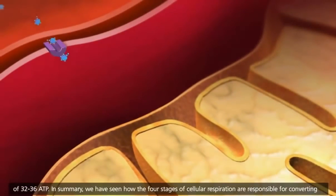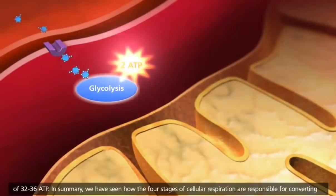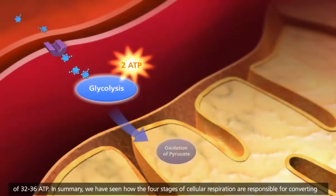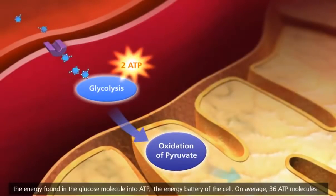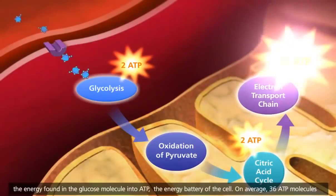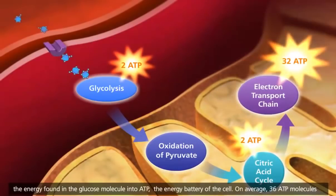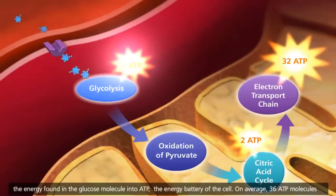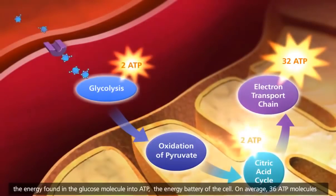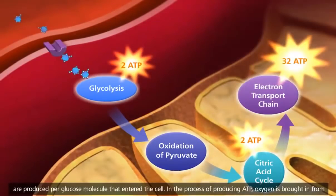In summary, we have seen how the four stages of cellular respiration are responsible for converting the energy found in the glucose molecule into ATP, the energy battery of the cell. On average, 36 ATP molecules are produced per glucose molecule that entered the cell.